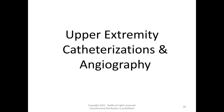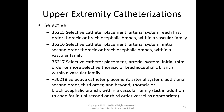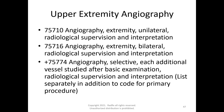Now for upper extremity catheterizations and angiography: the same non-selective codes apply, and selective codes 36215 through 36218 are used since we are above the diaphragm. Upper extremity angiography codes include 75710 for unilateral imaging, 75716 for bilateral imaging, and add-on code 75774 for additional vessels. Code 75774 requires that the catheter has been moved further during the procedure — a base code can only be assigned one time, and then 75774 applies for additional selective catheterization with additional imaging.